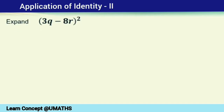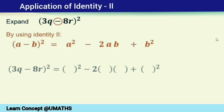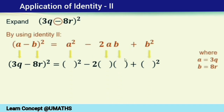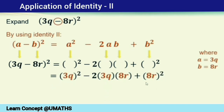Let us practice the application of this identity. Expand 3q minus 8r, whole square. This is the perfect square of the difference of 3q and 8r, so we apply the second identity. Comparing with a minus b whole square, we identify a as 3q and b as 8r. Inserting these values and remembering coefficients while squaring, the final form is 9q squared minus 48qr plus 64r squared.